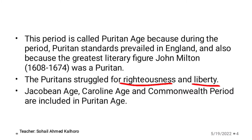The Puritan Age is divided into three sub-periods. Number one is the Jacobean Age, the age of King James the First. Number two was the Caroline Age, the age of Charles the First. And third was the Commonwealth Period, the period in which there was no monarchy, no king in England. These three periods are included in the Puritan Age.